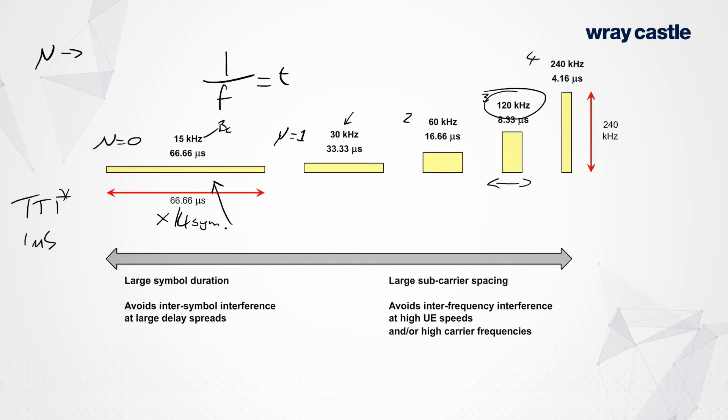Now the math is not so hard here, but if we double the subcarrier spacing to 30kHz and we half the symbol time, then in the same period of time, 1ms, well, how many symbols are we going to transmit? Well, it's going to be double that, isn't it? So 28.